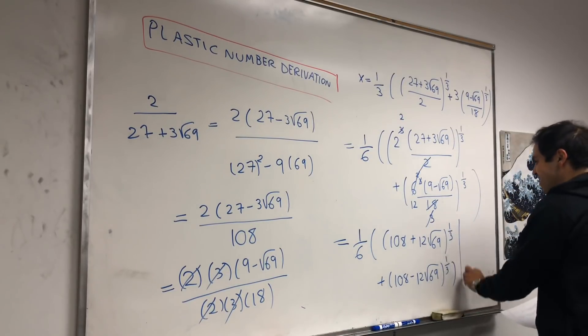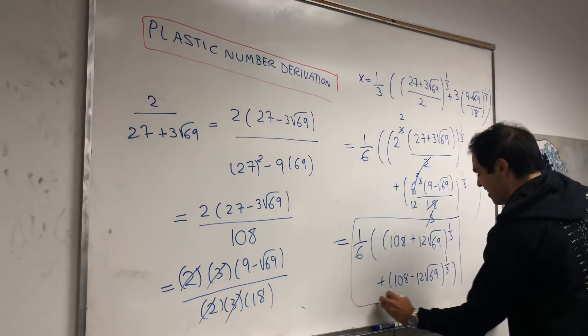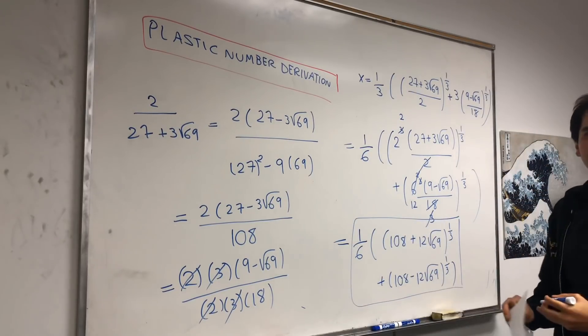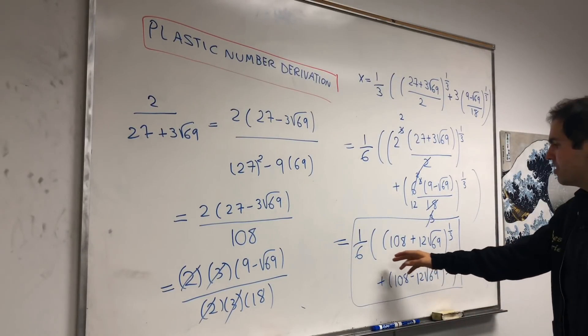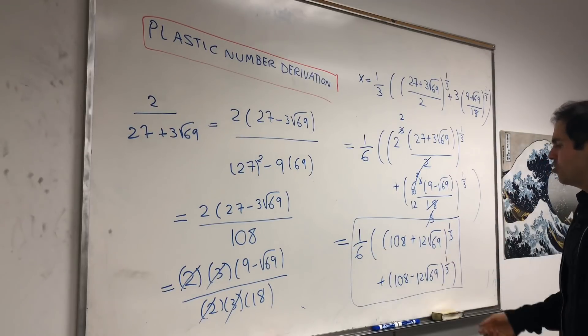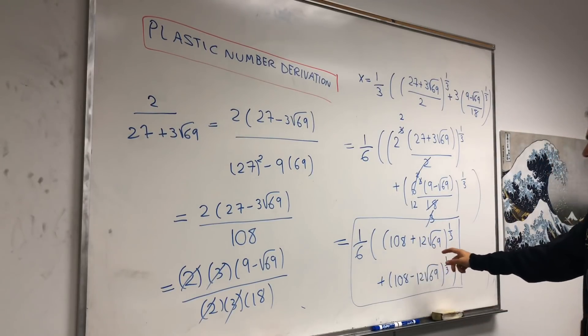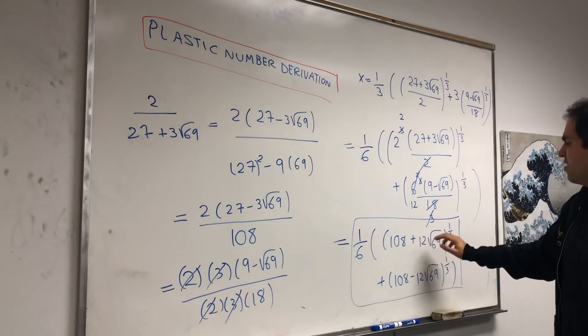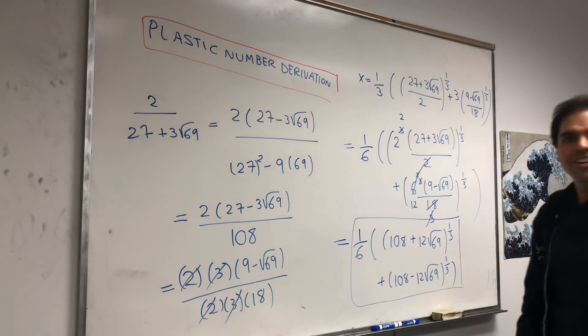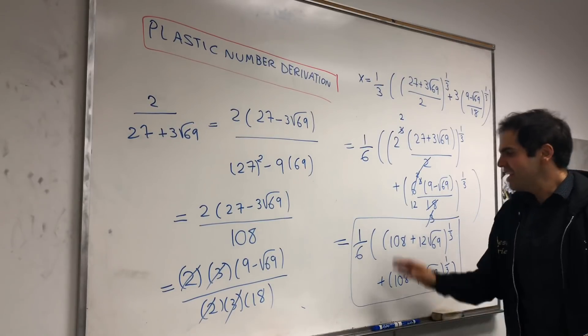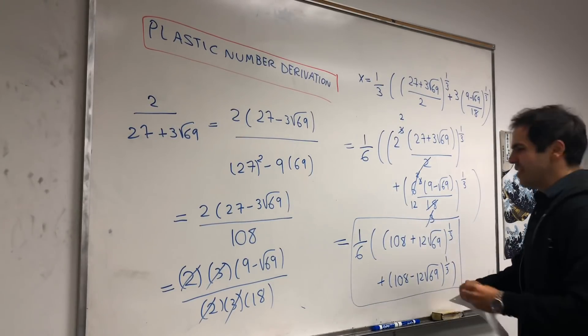Which is a much neater, explicit formula for the plastic number, so there you go, and I guess you can also simplify it a little bit by doing, you know, maybe putting the 6 in the cube root to get, I think, something like, something plus 1 half square root of 69, and something minus 1 half square root of 69, or something like that, but for our purposes, that's enough.